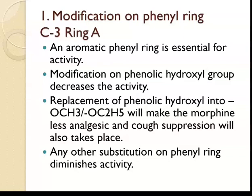Modification at C3 position: the aromatic phenyl ring is essential for activity. Modification on the phenolic hydroxyl group decreases activity. Replacement of the phenolic hydroxyl with OCH3 or OC2H5 makes morphine less analgesic, and cough suppression also takes place. Any other substitution on the phenyl ring diminishes activity.